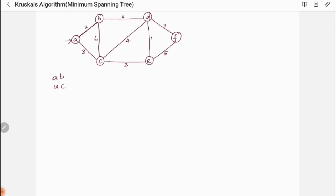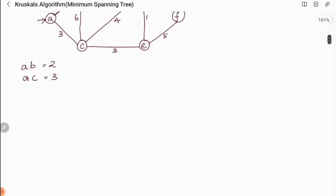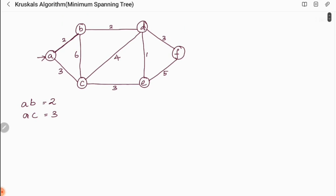I am writing A to B, the cost given here is 2. Then A to C, the cost is 3. Next we have edge BC with cost 6, BD with cost 2, and CD with cost 4.